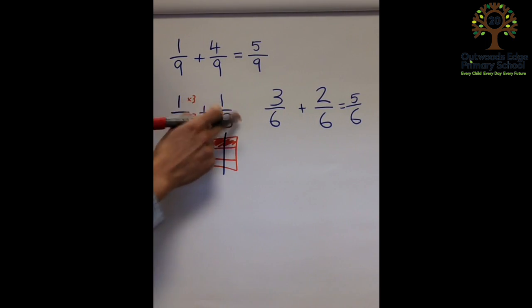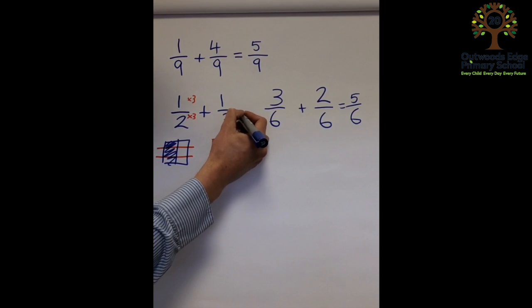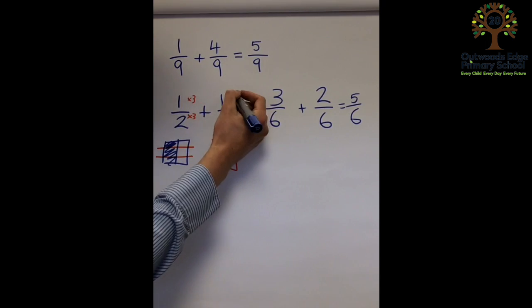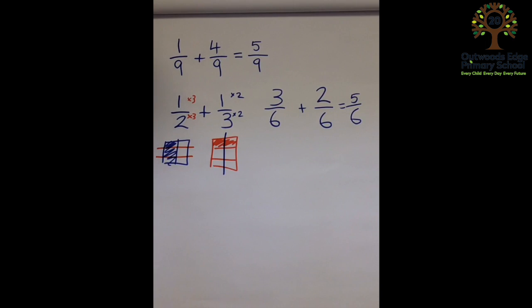And it's the same over on this side. On this side, I times that number by two. So I've got to do the same to the number at the top to get two sixths.